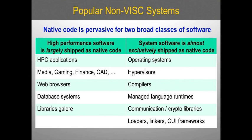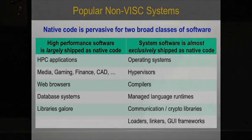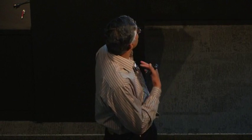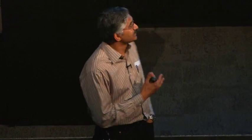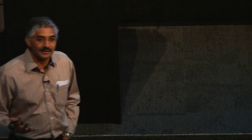There are at least two important classes of software that don't use virtual instruction sets, and perhaps they should. The first one is high-performance software — HPC applications for supercomputers, but also media software, game engines, financial software, CAD tools, web browsers, database systems, and many high-performance libraries — essentially all written in static languages and shipped as native binary code. And even more pervasive is system software: operating systems, hypervisors, daemons, cryptographic libraries — all written in static languages and shipped as native binary code.